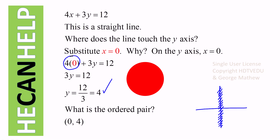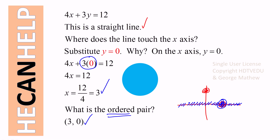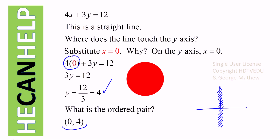Divide both sides by 3 and you get y equals 4, since 12 divided by 3 is 4. Now be very careful: x is equal to 0 and y is equal to 4, so the ordered pair is (0, 4). Remember, x comes first — for the x-intercept it was (3, 0), and for the y-intercept it is (0, 4).